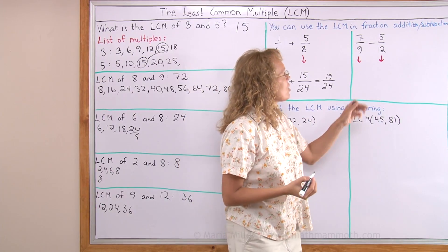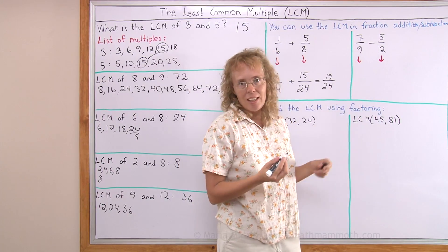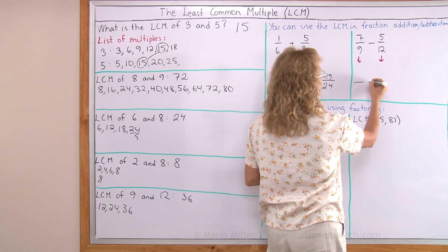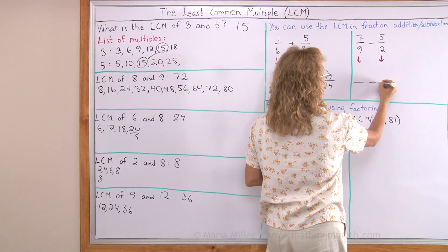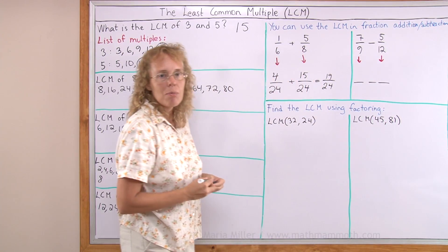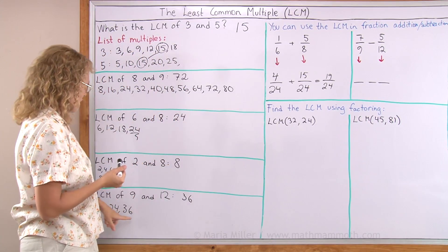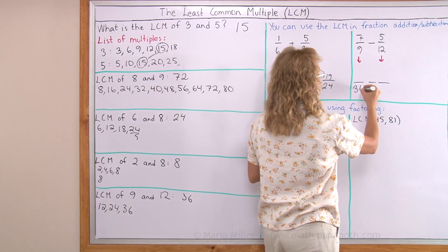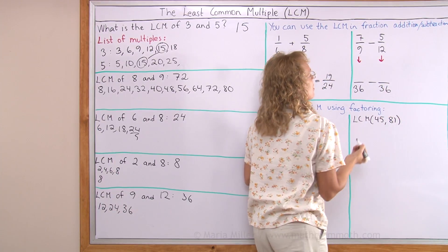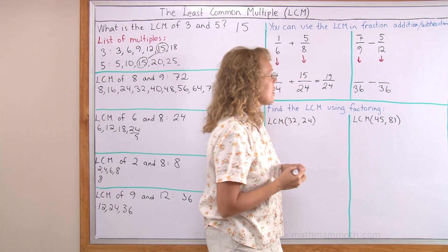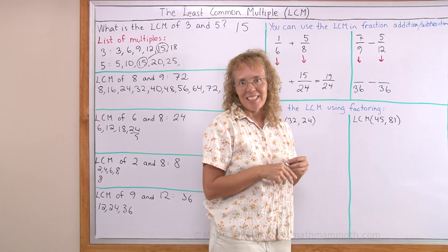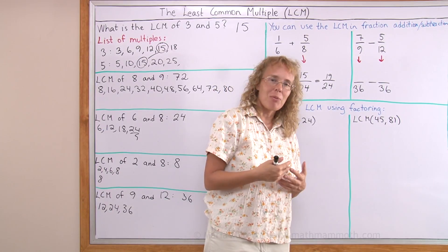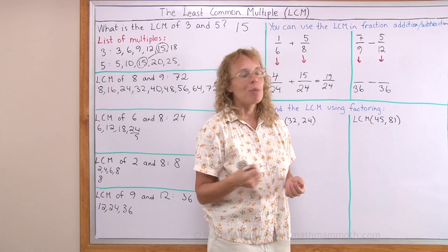Or in subtraction here, these are unlike fractions, so I have to find a common denominator before I can subtract. The least common multiple of 9 and 12 was 36, so I'll use 36 as my new denominator. It's actually the least common denominator — the least common multiple of the denominators is the least common denominator.